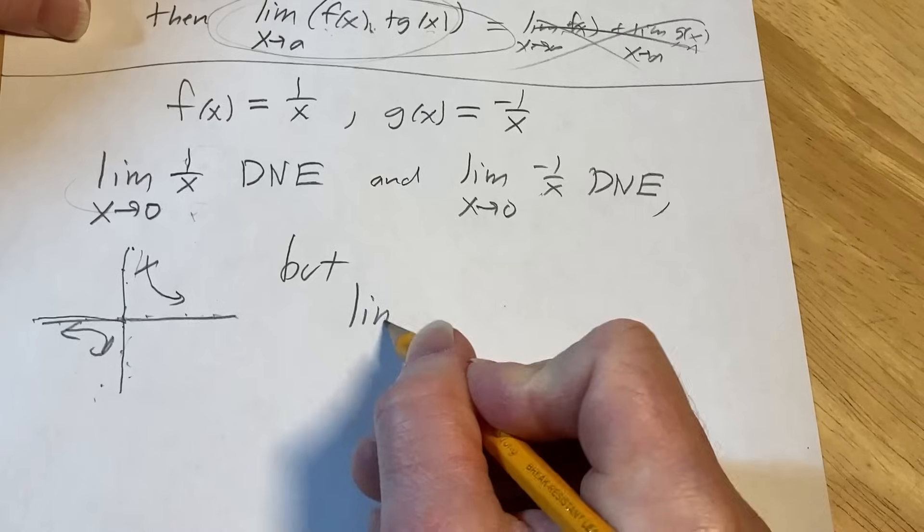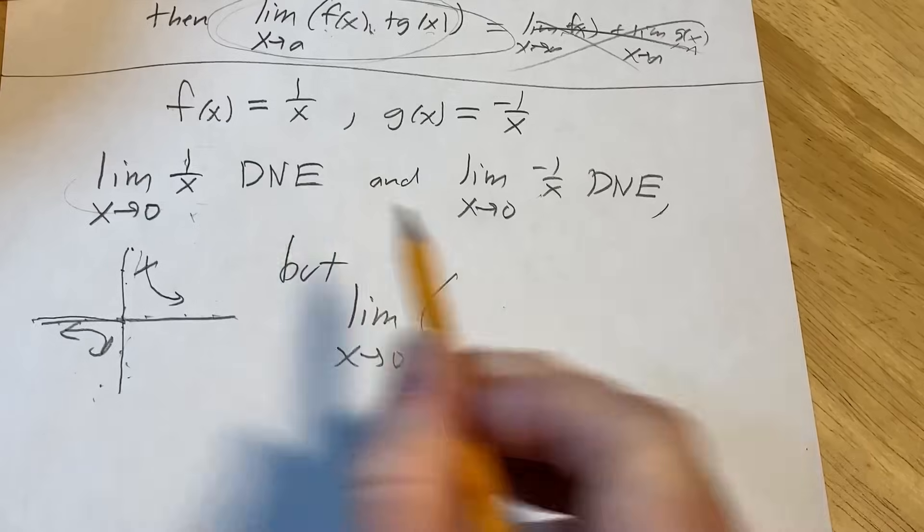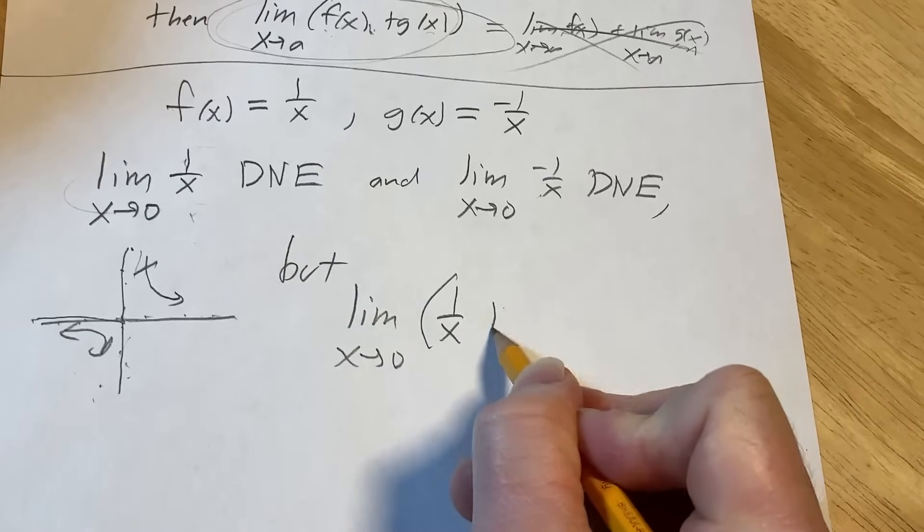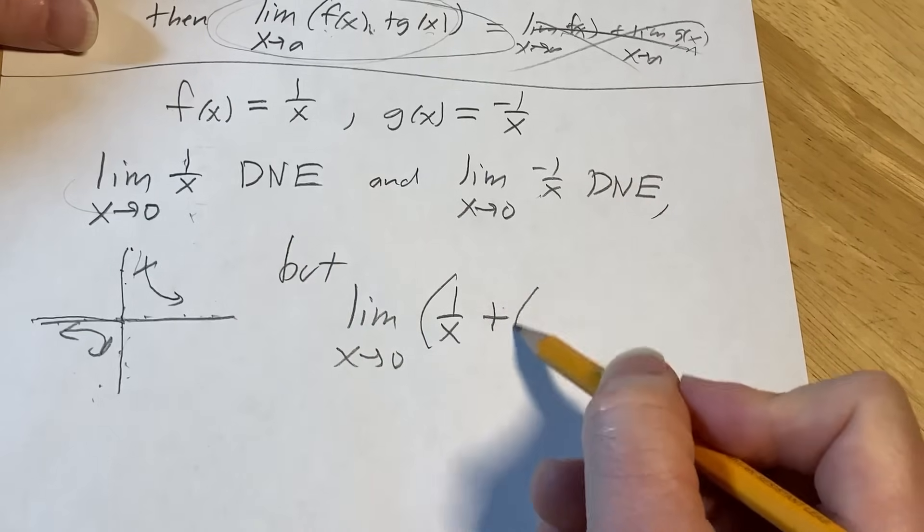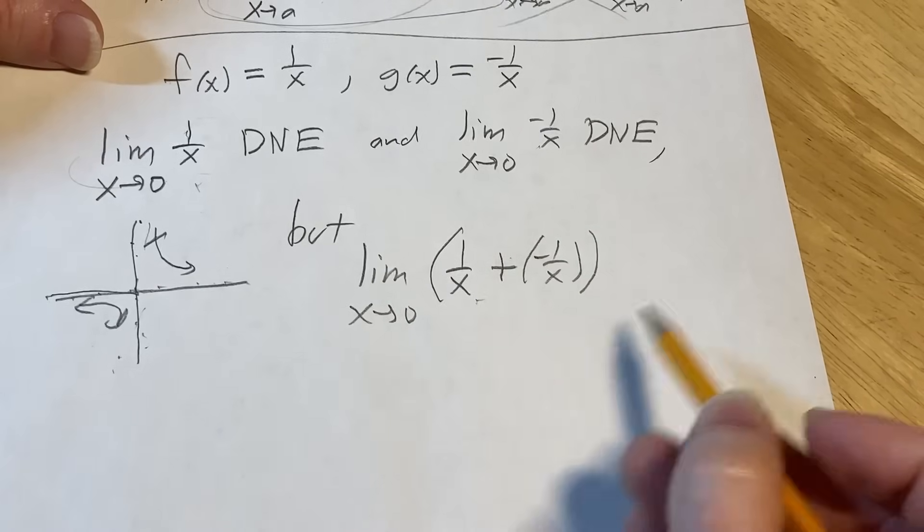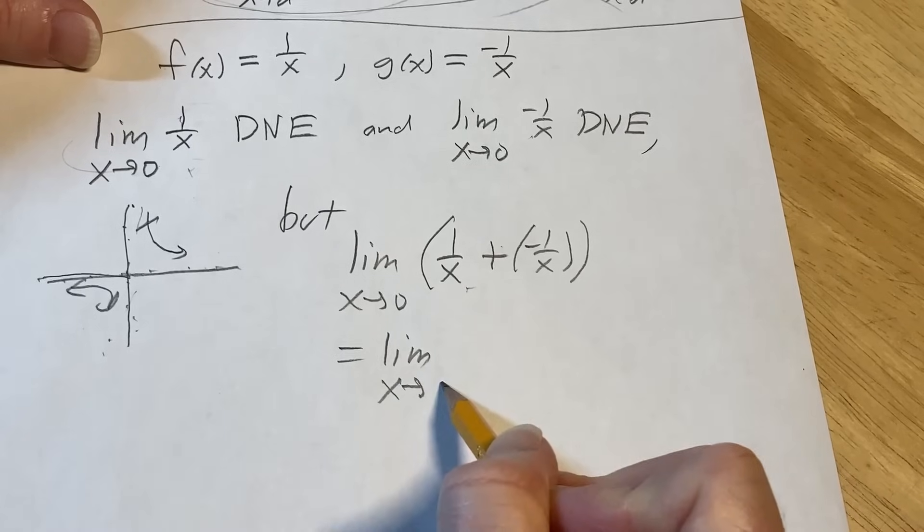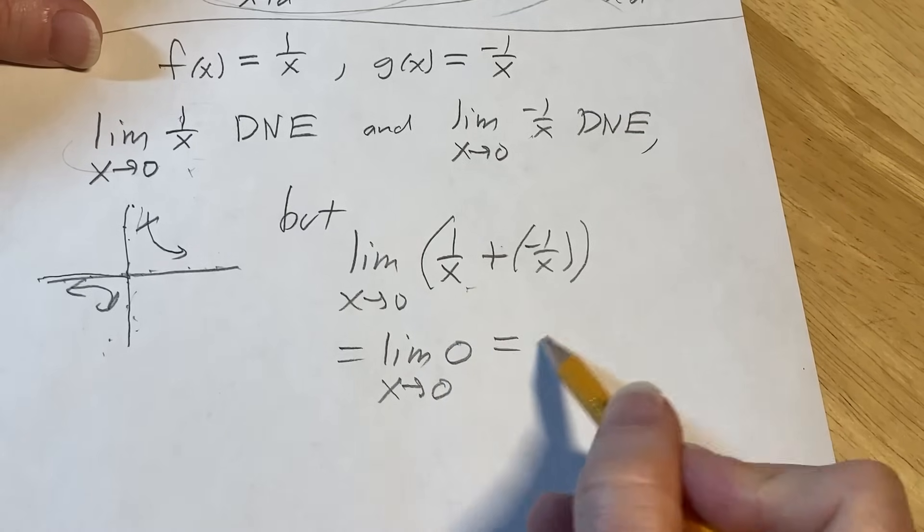But here's the cool part. When you add these, if you take the limit as x approaches 0 of f of x, which is 1 over x, and you add it to g of x, which is negative 1 over x, well, 1 over x plus negative 1 over x, that's going to be 0. And that's equal to 0.